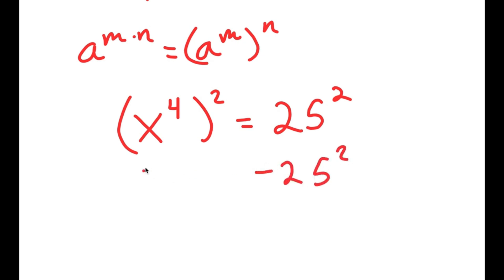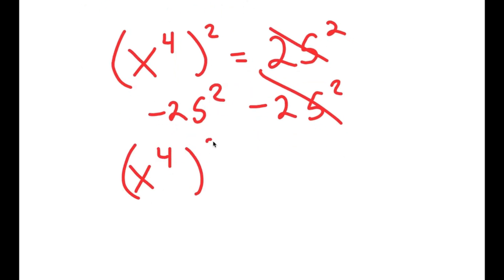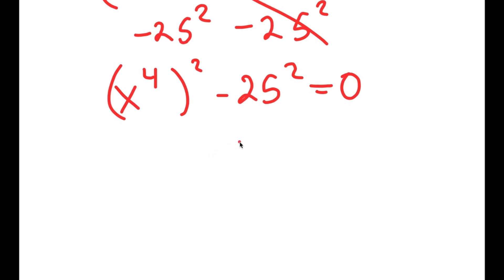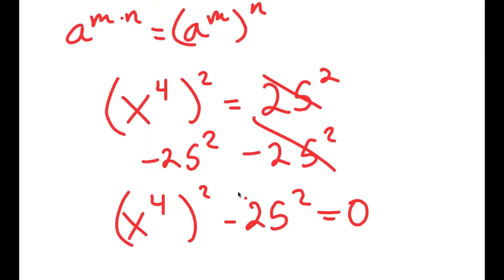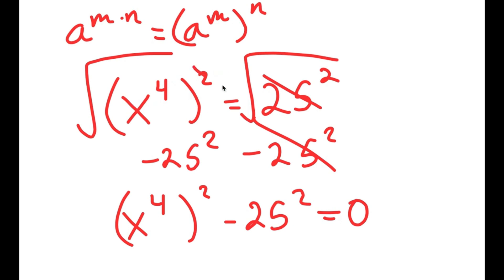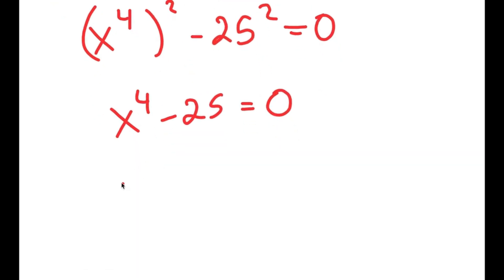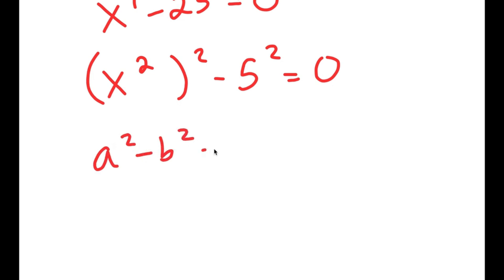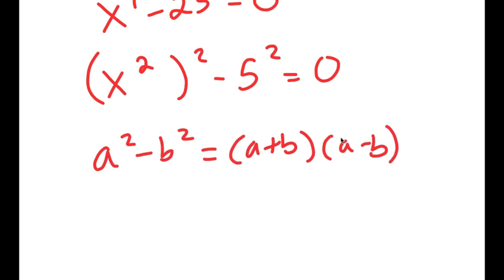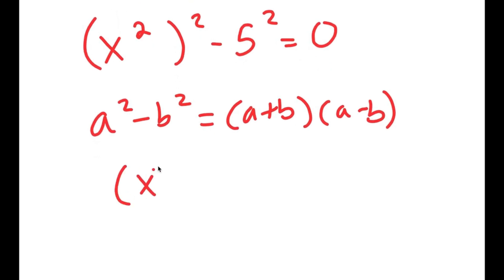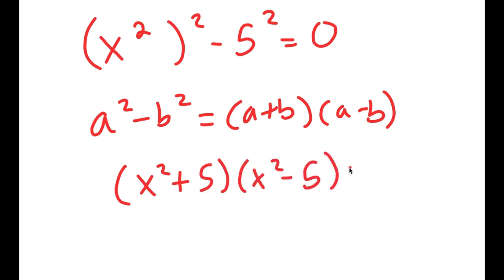Now I'm going to subtract 25 squared on both sides, so these two cancel out and I get x to the power of 4 squared minus 25 squared is equal to 0. I take the square root on both sides to cancel the squares, giving me x to the power of 4 minus 25 equals 0. I rewrite this as x squared to the power of 2 minus 5 squared equals 0, and use the difference of squares formula a squared minus b squared equals a plus b times a minus b. This turns into x squared plus 5 times x squared minus 5 equals 0.